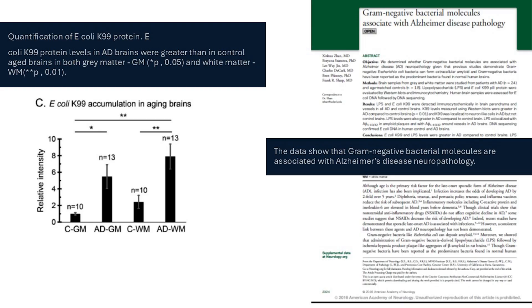Perhaps you think the brain may be immune to bacterial infiltration due to the blood-brain barrier. This study looked at the presence of E. coli DNA in the white and gray matter of the brains of deceased healthy controls compared to Alzheimer's disease subjects. As you can see in figure C, in both white and gray matter, the Alzheimer's patients had significantly higher levels of E. coli DNA in their brains than did the age-matched healthy control donors. We're talking systemic pro-inflammatory responses of the immune system to types and amounts of bacteria where they don't belong.